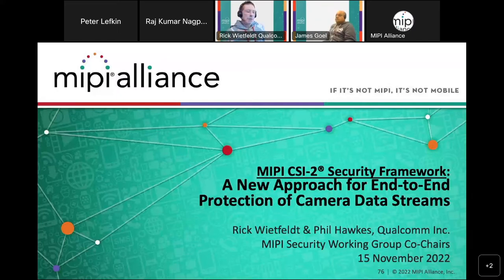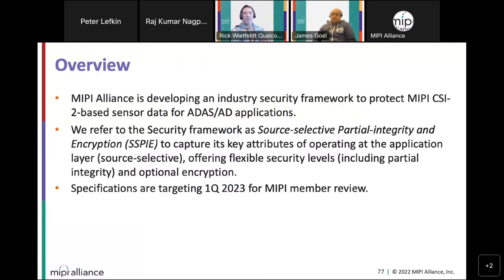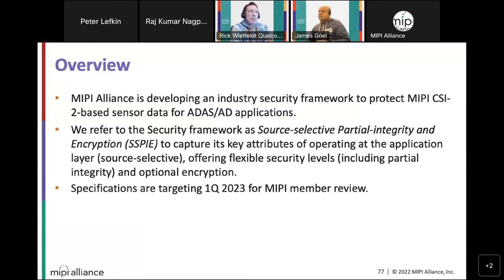Today we'll spend about 25 minutes talking about CSI-2 based security for cameras, which is also applicable to any technology that uses CSI-2, such as LiDARs and radars. MIPI has been developing a security framework for the last couple of years to protect CSI-2 based data streams. The primary application discussed here is ADAS and autonomous driving, and the framework also applies to securing connectivity to various display types.